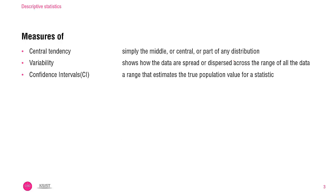The descriptive statistics offer three major measurements. First, it is about central tendency, whether it is simply the middle or central or part of any distribution. Second, it is variability. The variability shows how the data are spread or dispersed across the range of all the data. Last, it is about confidence interval, in short CI. It is a range that estimates the true population value for a statistic.